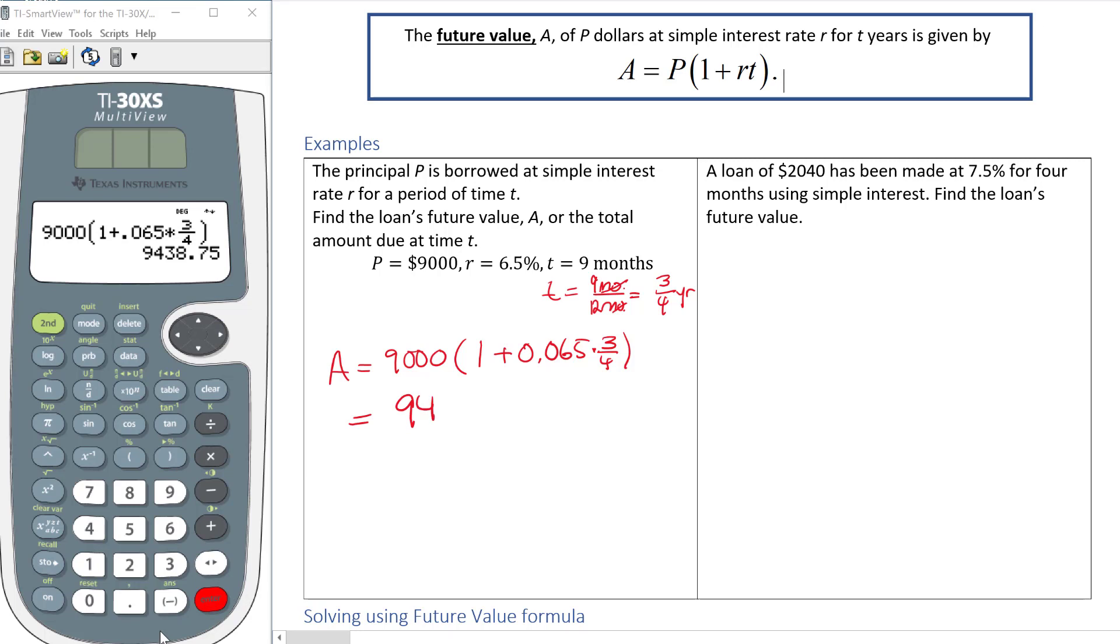This gets me $9,438.75. So that is going to be the future value of everything that I'm going to owe at the end of the time. This is the $9,000 that I borrowed plus all the interest.